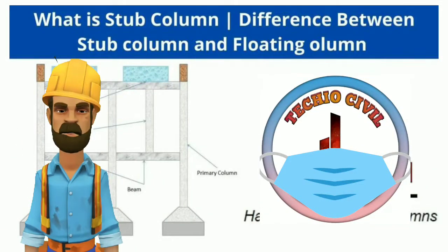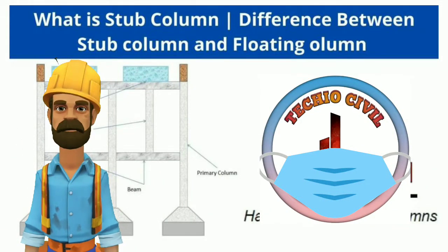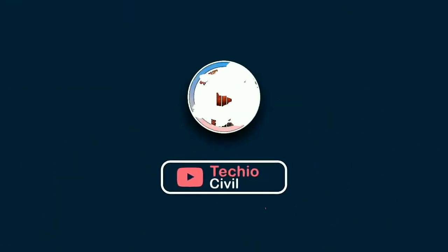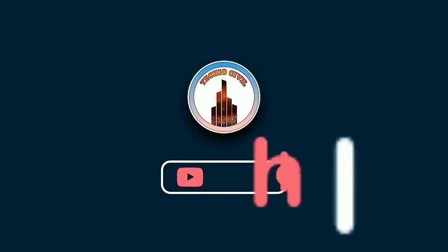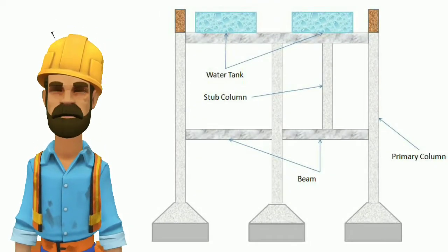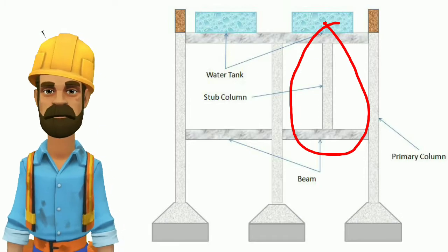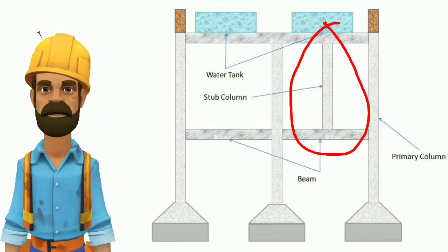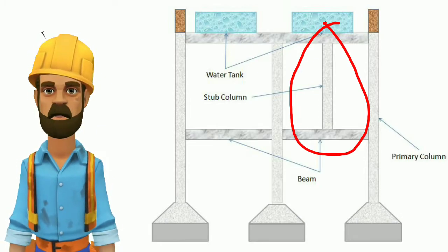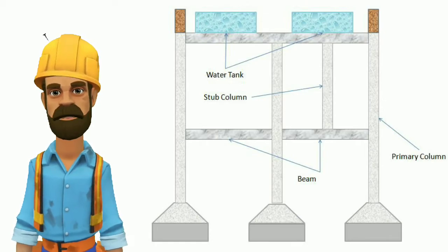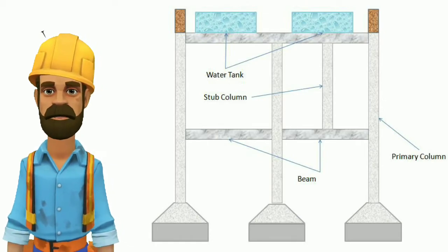Welcome to Tekyo Civil. Today we learn about stub column. A stub column is defined as a type of column that is not directly connected with footing. Stub column is generally constructed over the beam or slab to transfer the load on the primary beam. Now let's see when stub column is used.